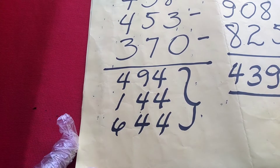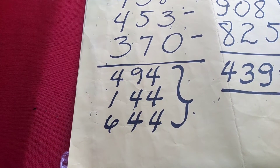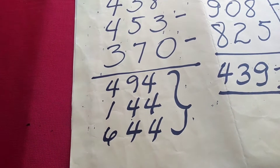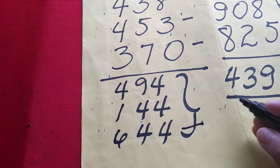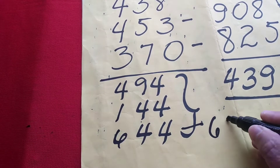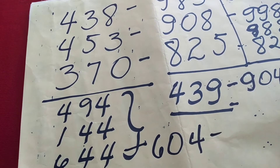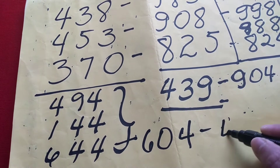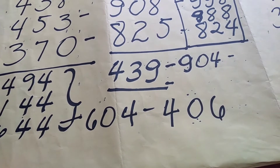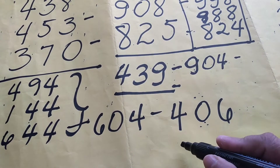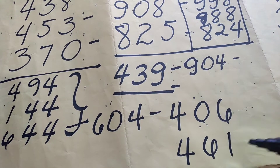Tapos dinagdagan, sa gabi ito ay naging 4, 6, 1. Halimbawa, ito ay pwede maging 6, 0, 4. Pinalabas nila bilang 4, 0, 6. Tapos sa gabi ito ay naging 4, 6, 1.